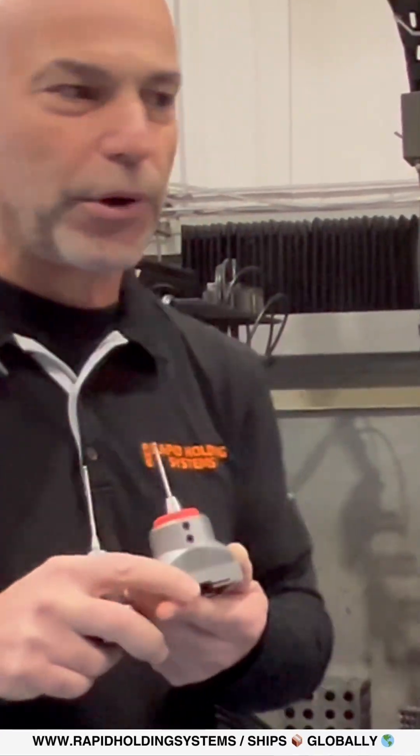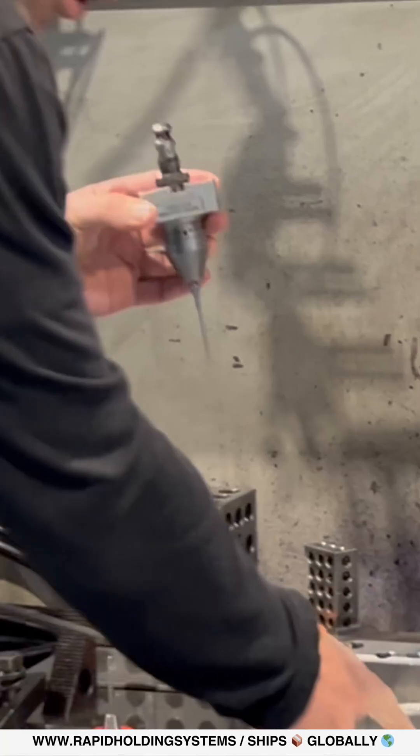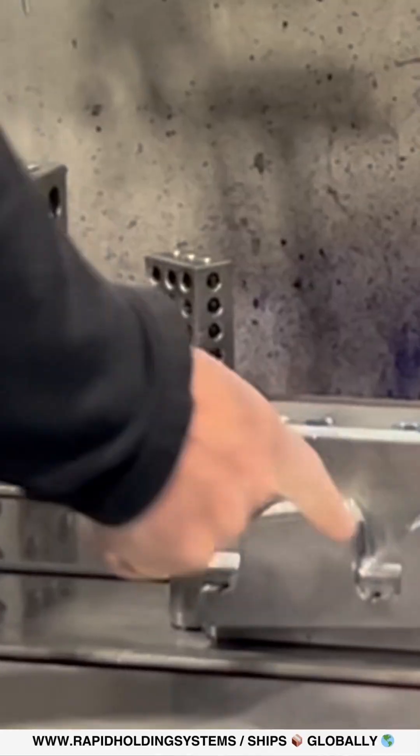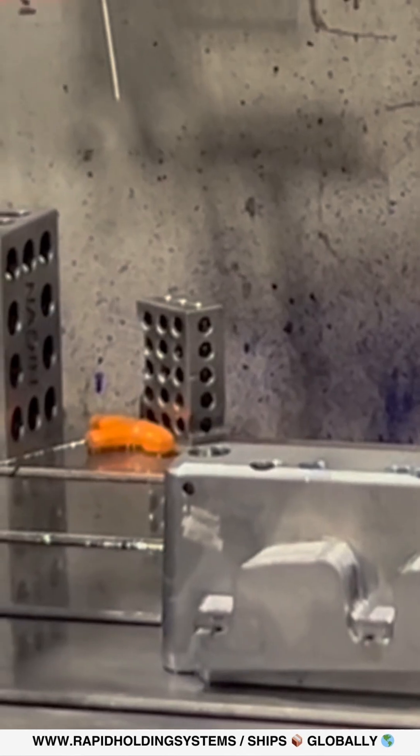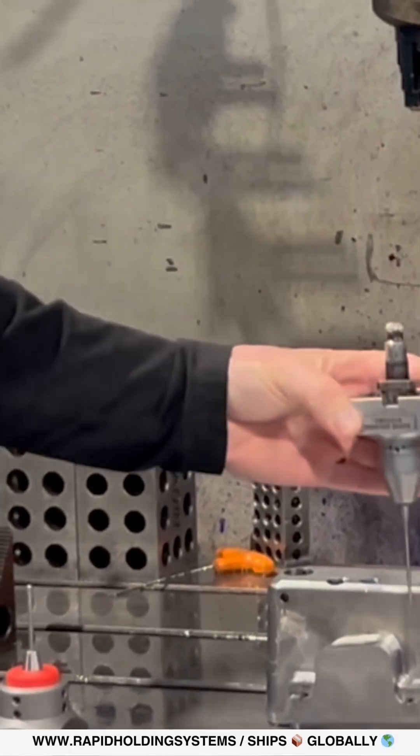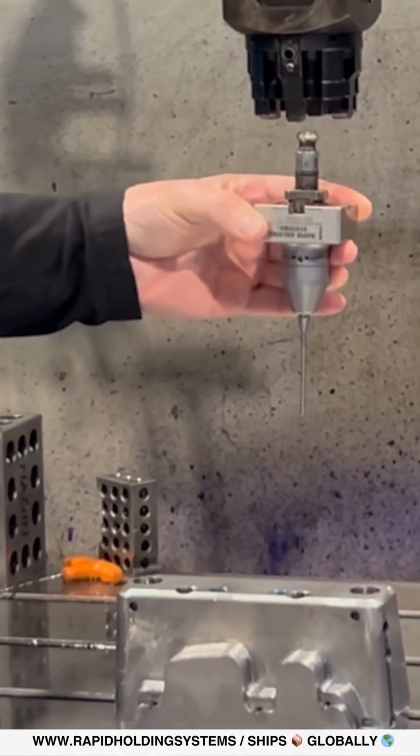We're going to put it in the machine and probe this part. We have to probe this little boss feature down the side of this slide. This is for an injection mold, so we're going to use this probe as it's a little bit slimmer and easier to get in place.